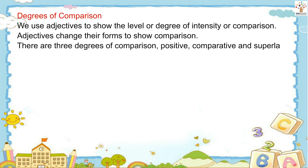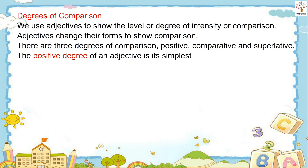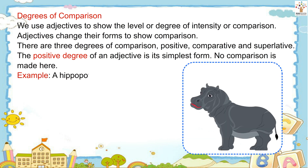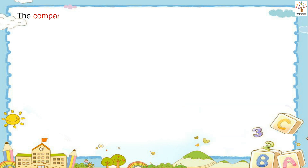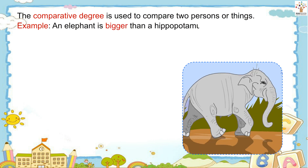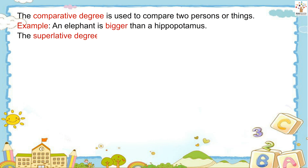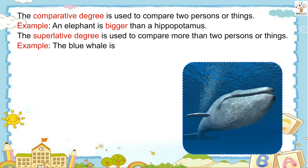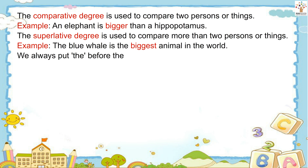The positive degree of an adjective is its simplest form — no comparison is made here. Example: A hippopotamus is a big animal. The comparative degree is used to compare two persons or things. Example: An elephant is bigger than a hippopotamus. The superlative degree is used to compare more than two persons or things. Example: The blue whale is the biggest animal in the world.